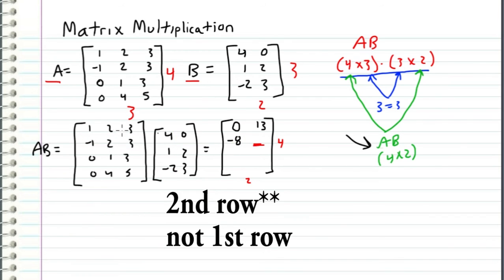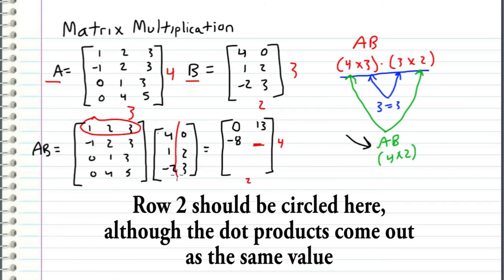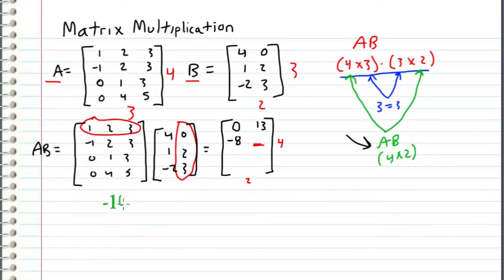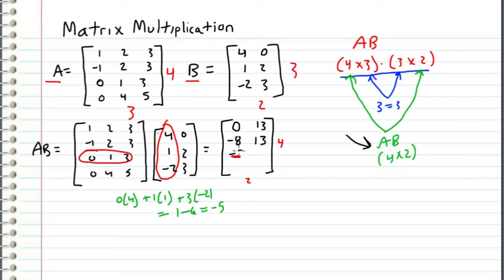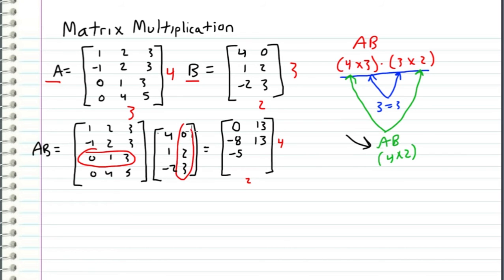Moving to the second row, second column, the dot product is zero plus two times two plus three times three, giving four plus nine, which equals 13. So we get another 13 there. Then for the third row and first column, the dot product is zero times four plus one times one plus three times negative two, which equals one minus six, equaling negative five. For the third row, second column: zero times zero plus one times two plus three times three equals two plus nine, which equals 11.